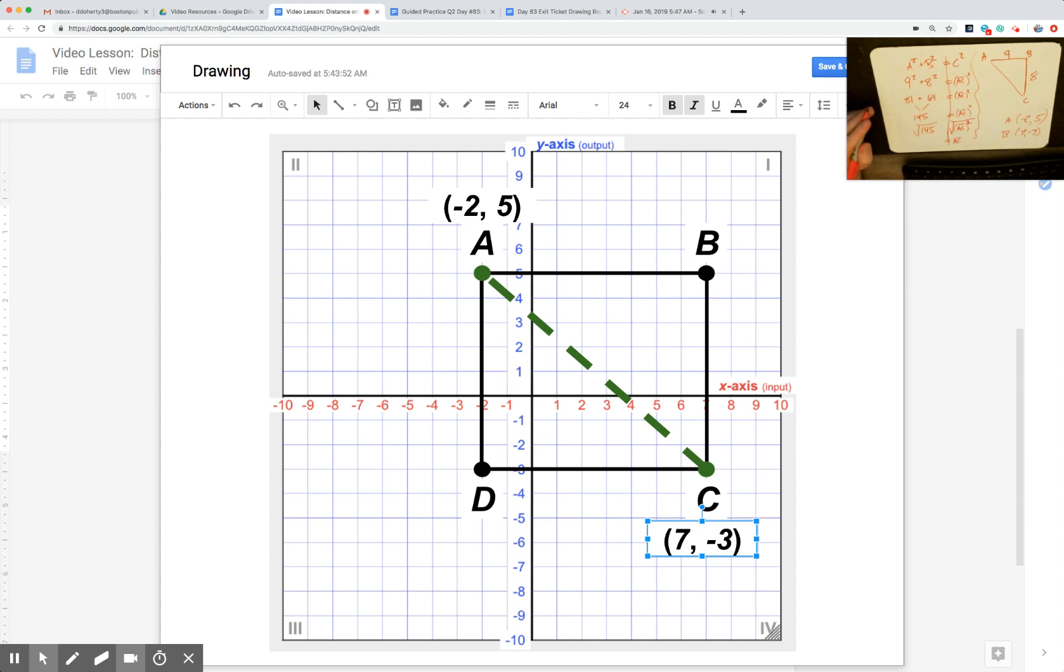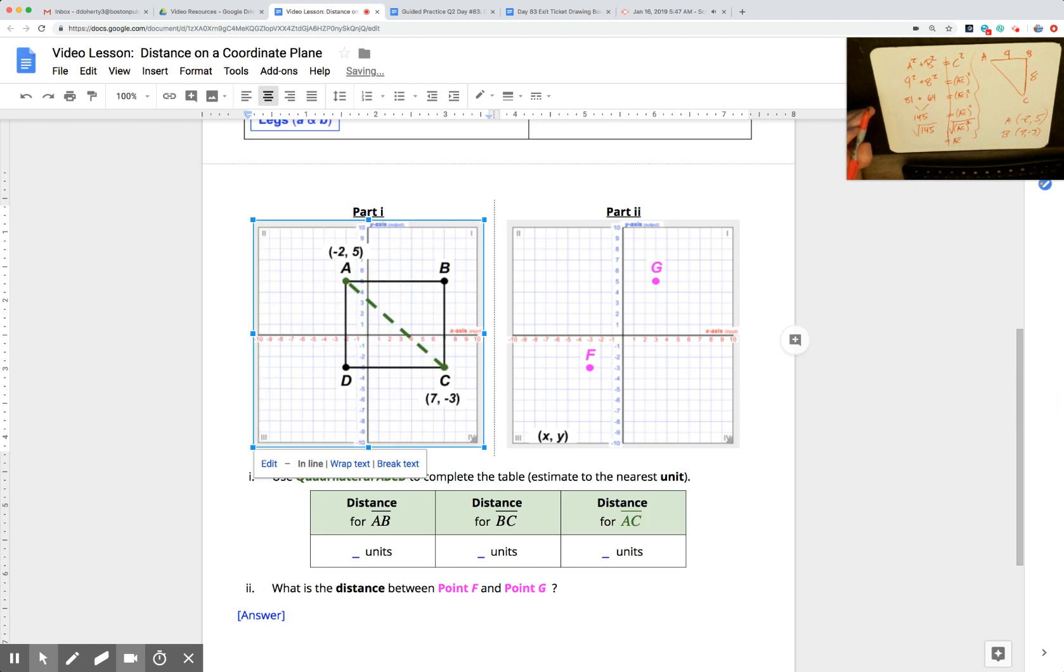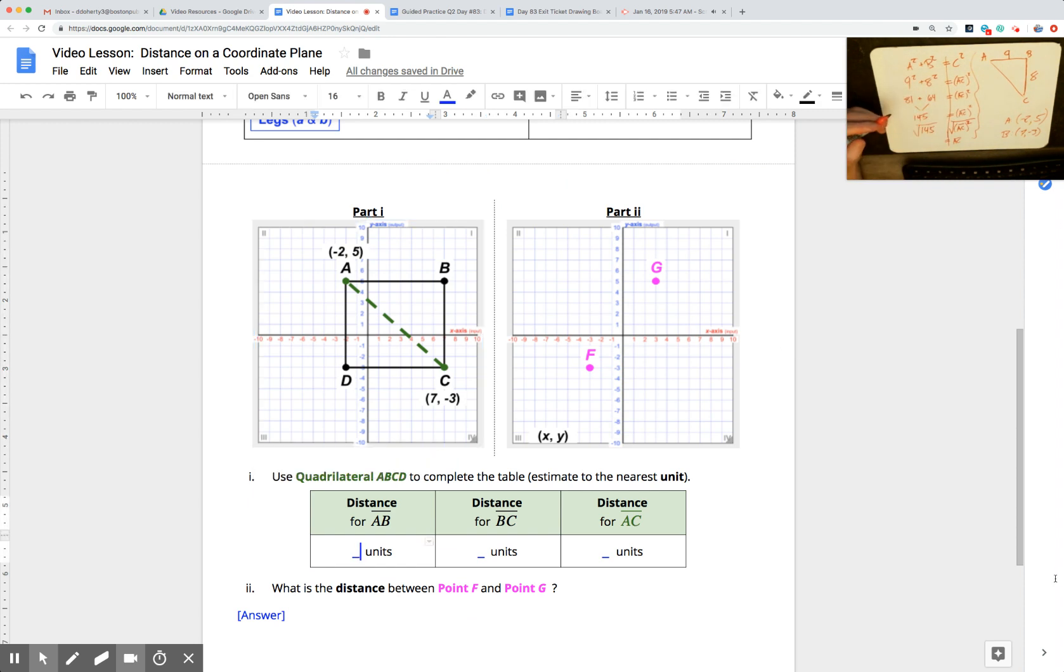Welcome back. We split this video up into two parts since it was getting a little long. We just finished Part 1, and for Part 1 we had seen on our whiteboard here—take a look up here on the whiteboard—we knew that the distance from A to B right here was 9 units. I'm going to plug that in.